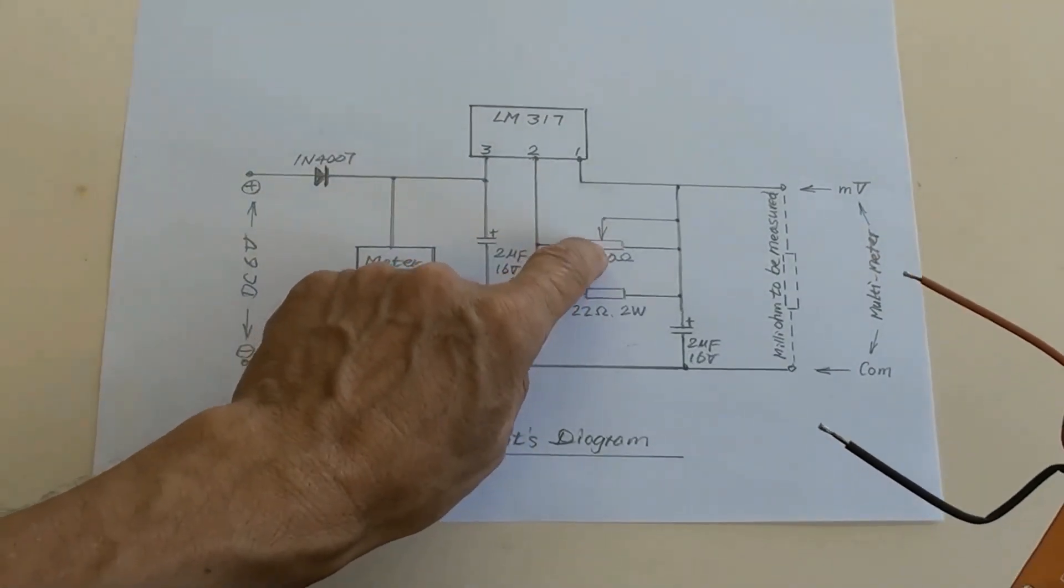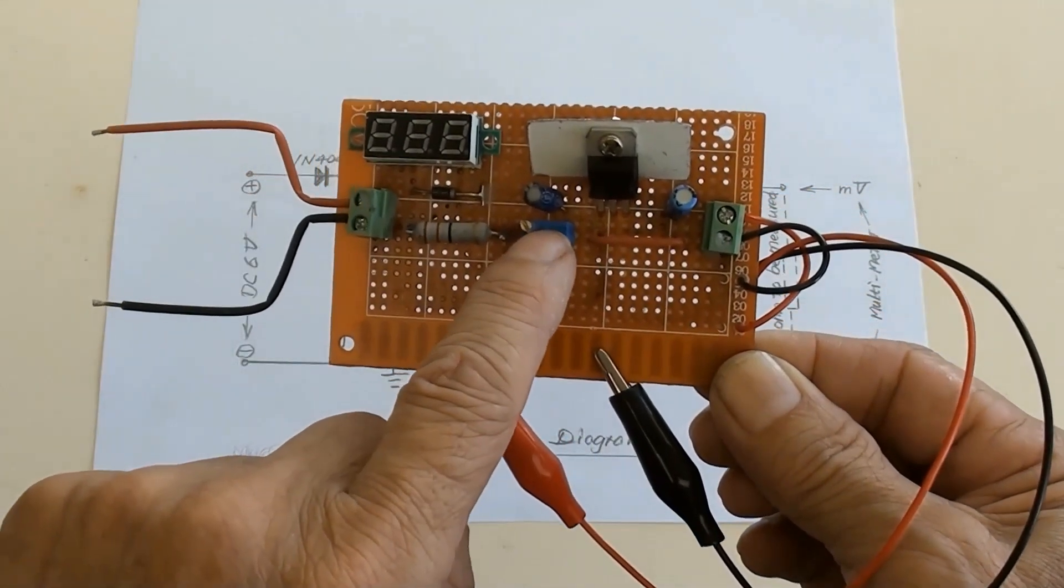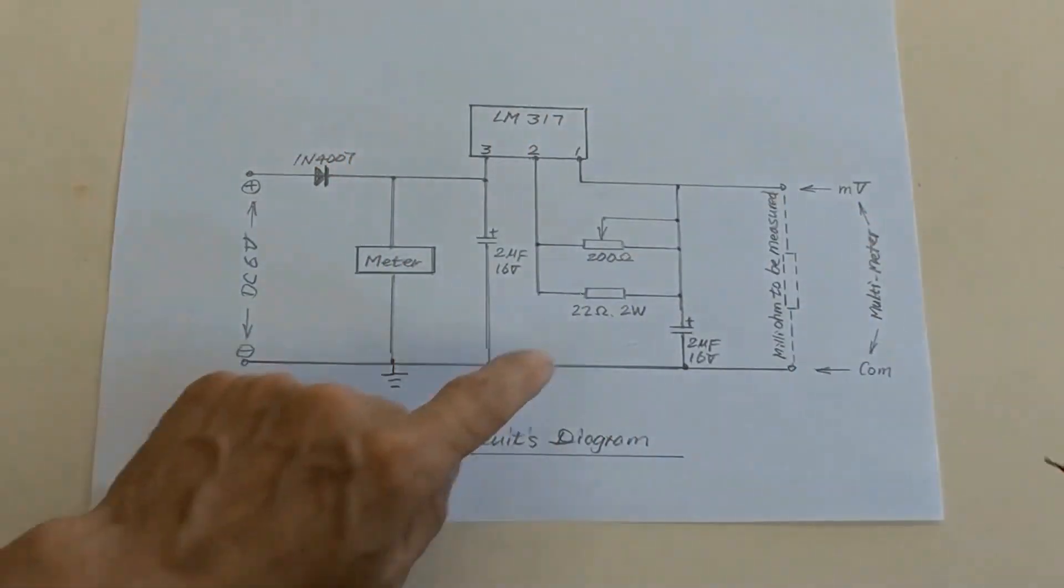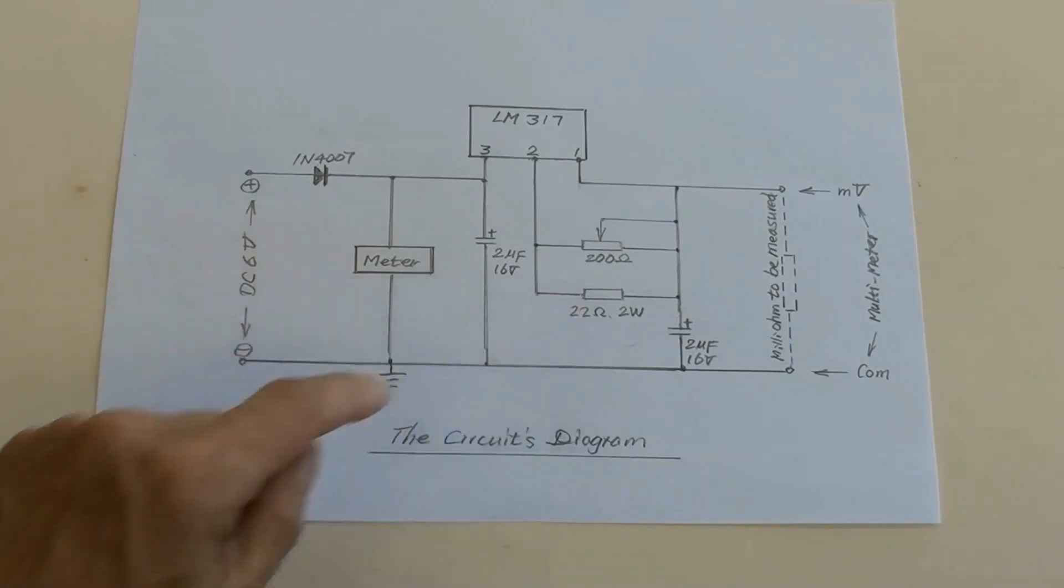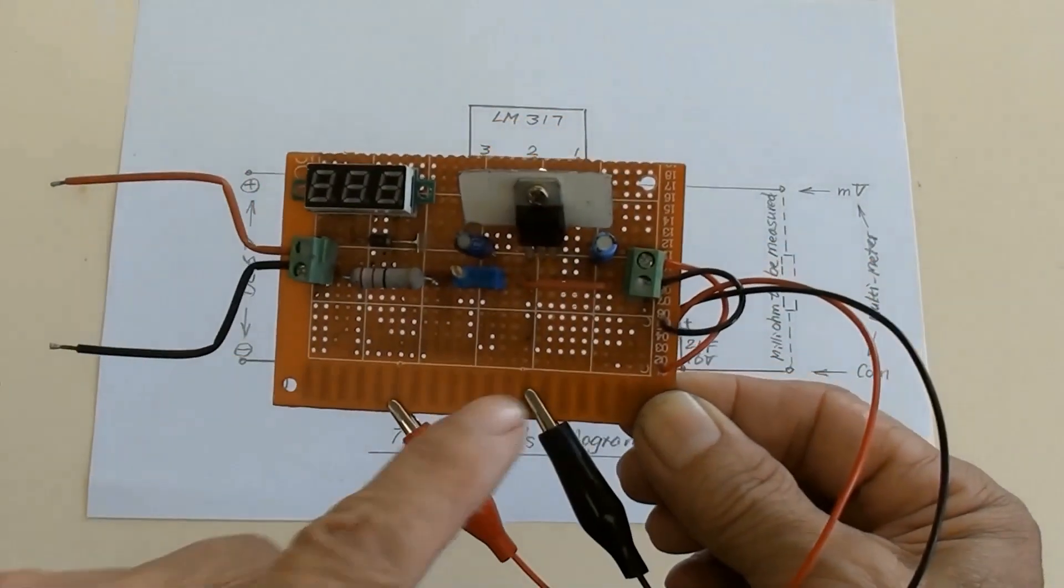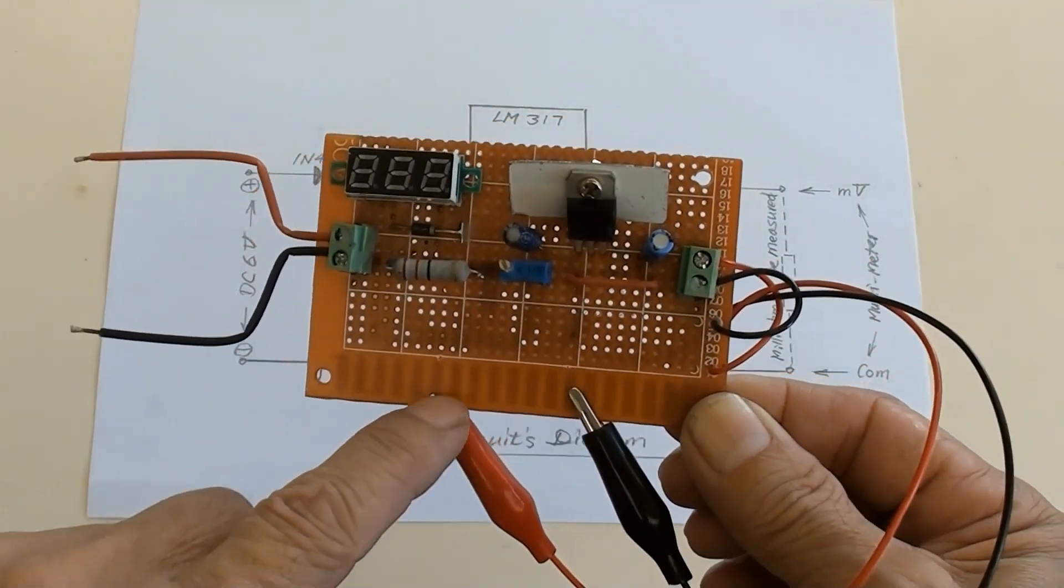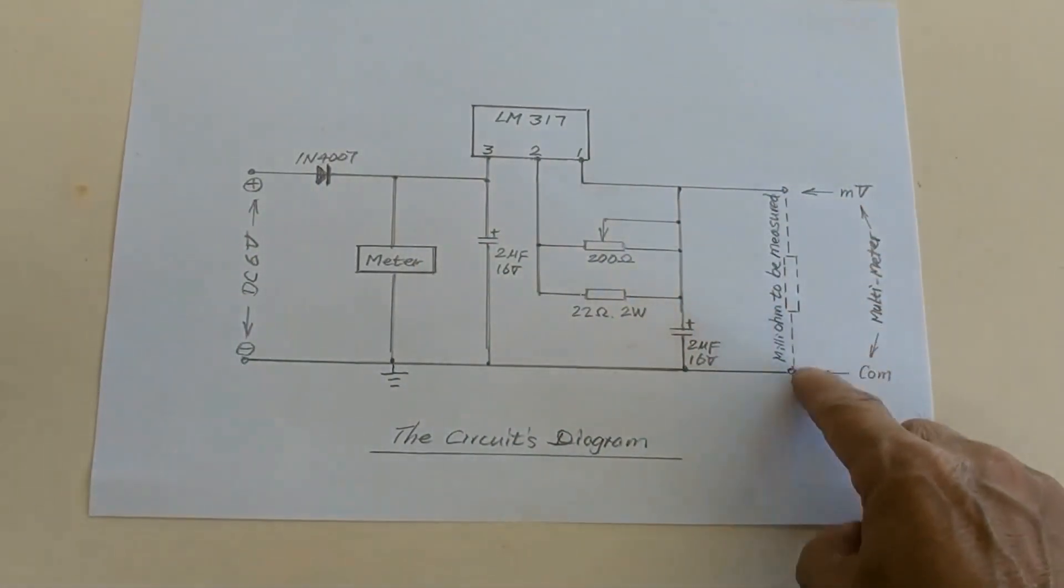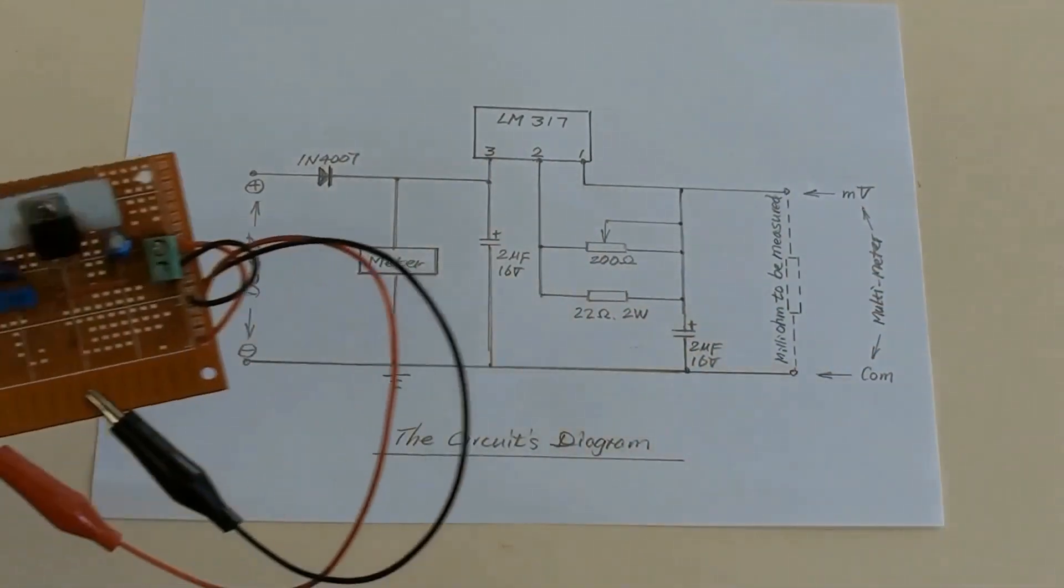A 200 ohm, 0.5 watt potentiometer, and a 22 ohm, 2 watt resistor are here. These PCB terminals on the right, with alligator clips connected, are for a milliohm resistor to be measured.